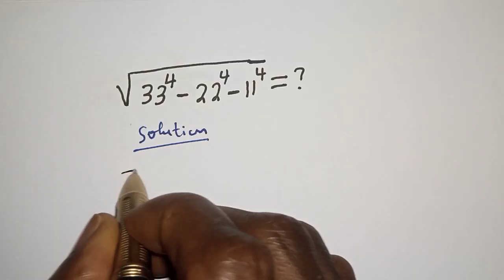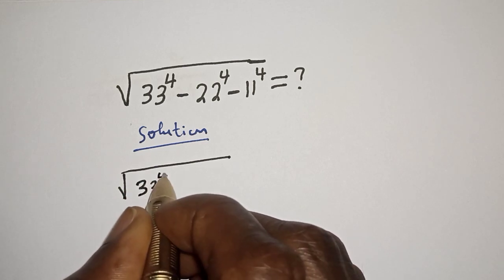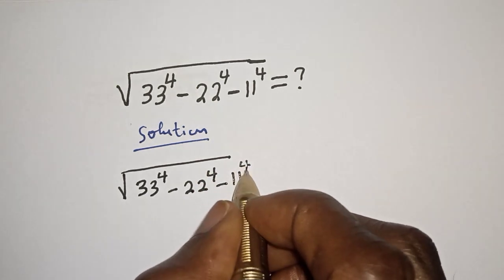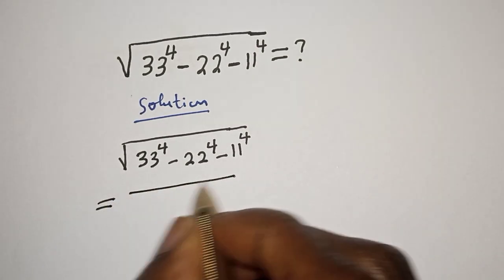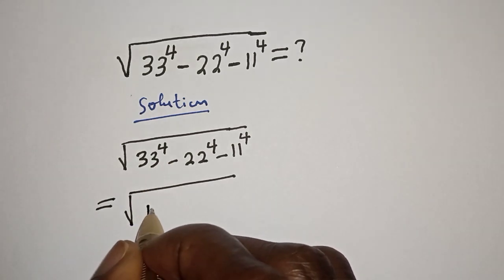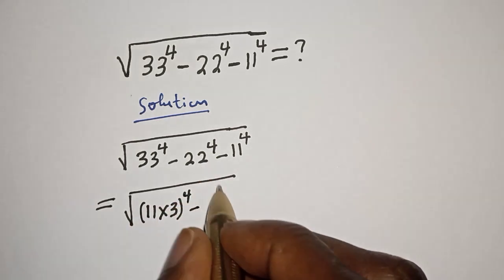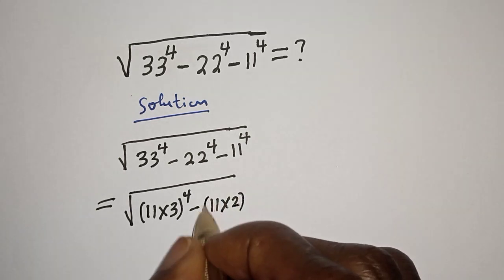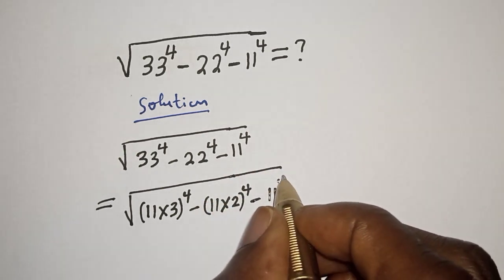Solution of square root of 33 raised to power 4 minus 22 raised to power 4 minus 11 raised to power 4. This is equal to square root of: 33 raised to power 4 can be written as 11 times 3, raised to power 4; minus 22 raised to power 4 can be written as 11 times 2, raised to power 4; minus 11 raised to power 4.